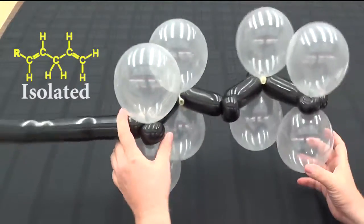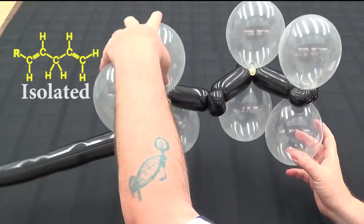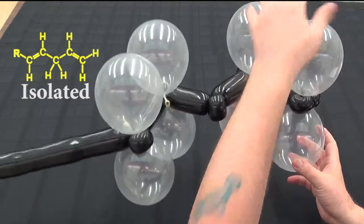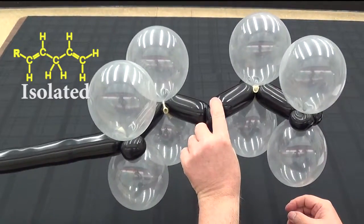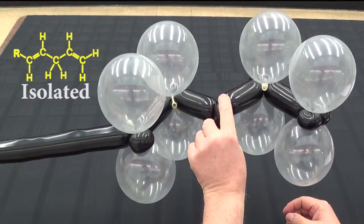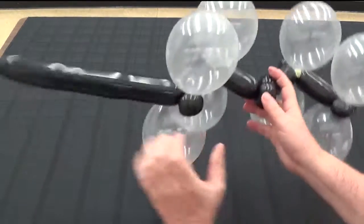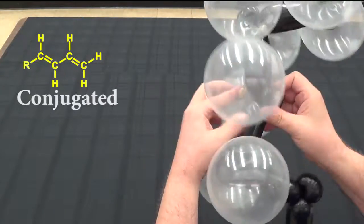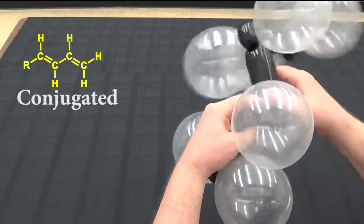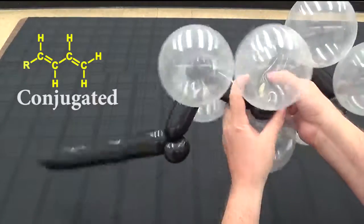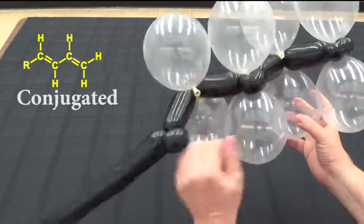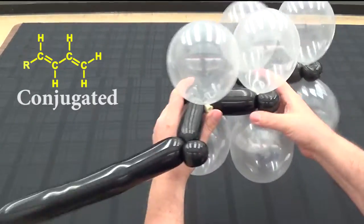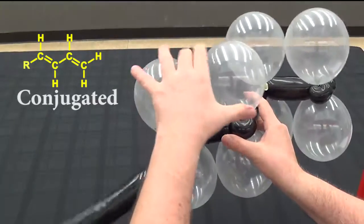Now in class, you can see this is one isolated double bond. A second isolated double bond. They're separated by a carbon in between. If we want to show a complete conjugated system, all we have to do is simply move this orbital into the center.